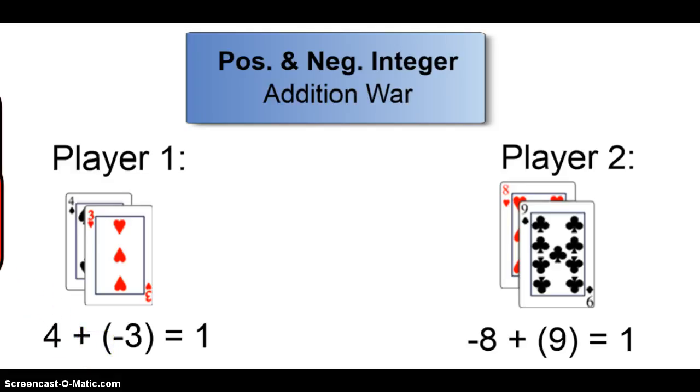In this example, we've got four plus a negative three is one, and negative eight plus nine is one. Here we have a tie.